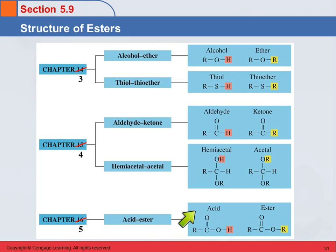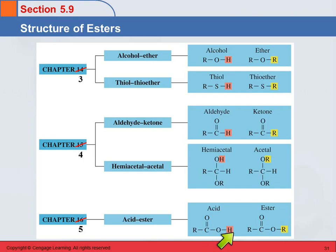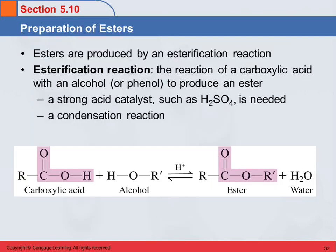They have different names because they have different properties. The esters are not acidic — they have no acidic hydrogen. Carboxylic acids are weak acids and they have that acidic hydrogen, so they form salts where the esters do not. So that's a helpful table.